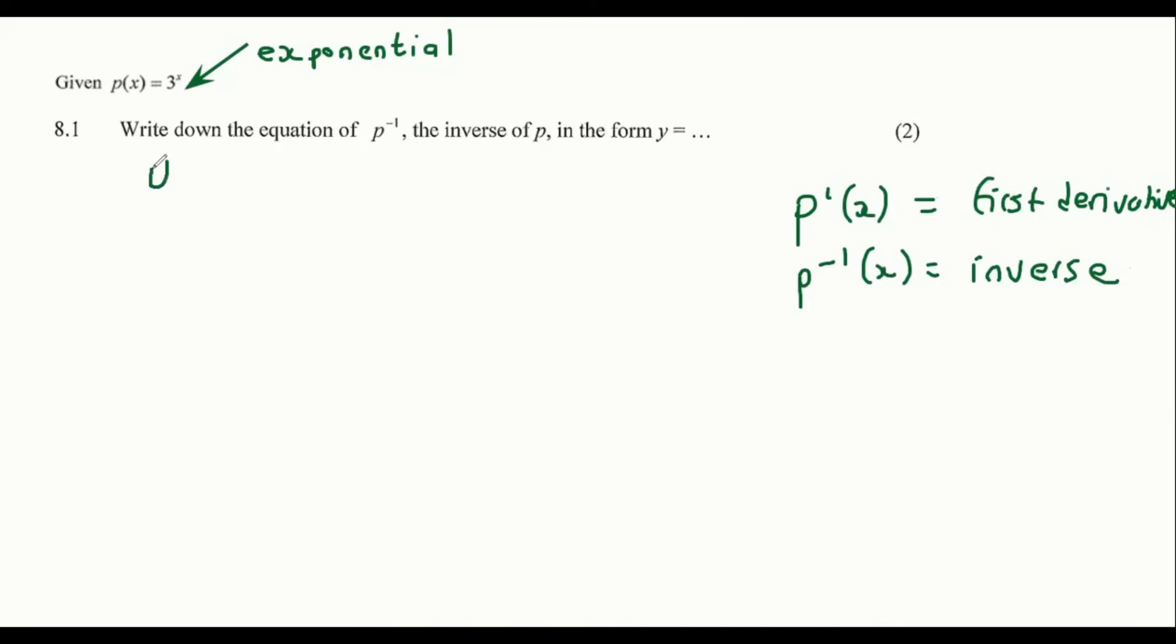So what we do when we take the inverse is we first change it to a y. Then we switch the y's and the x's around. And then we're going to try to get the y value alone again. We should remember that the inverse of an exponential is a log. So we're going to have to use some logs over here. Everyone's favorite. That's a joke. So we're going to have y equals to log₃x.